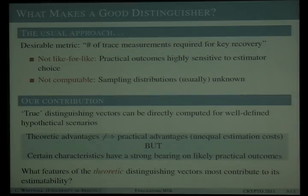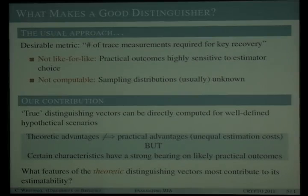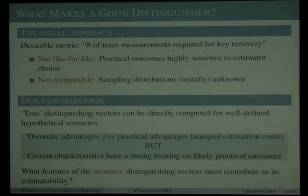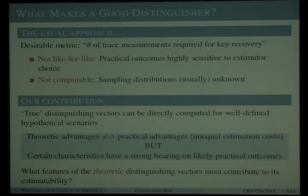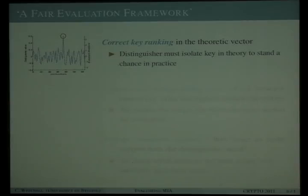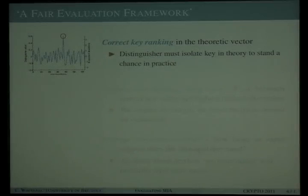Comparisons made on a theoretic basis do not directly translate to practical comparisons because different statistics carry different estimation costs. But certain characteristics of distinguishing vectors make them more or less easy to estimate with enough precision to isolate the correct key, ensuring our approach is practically relevant. We concentrate on three features of distinguishing vectors: the first is the ranking of the correct key in the attack vector.